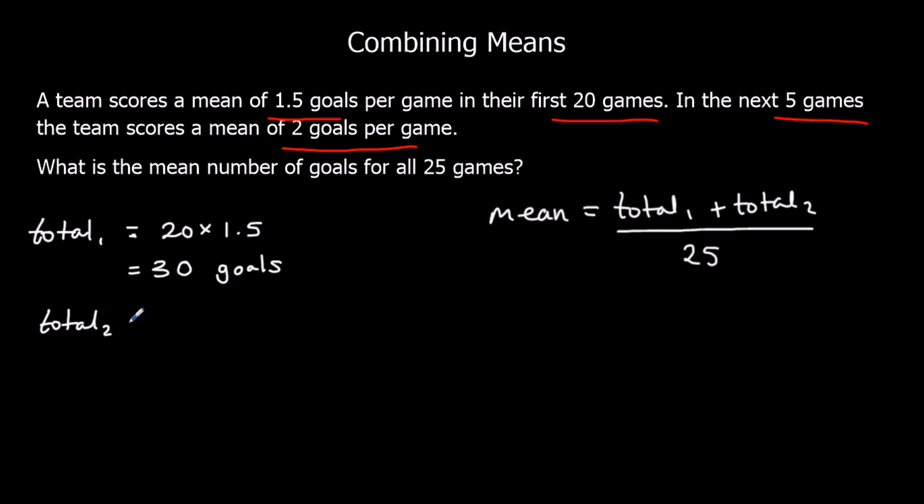Total two. So in the next five games, they scored two goals per game. So that must be 10 goals. So we've got 40 goals in total. So 30 goals plus 10 goals in 25 games. So type it into the calculator, 40 over 25, and that gives us 1.6 goals per game.